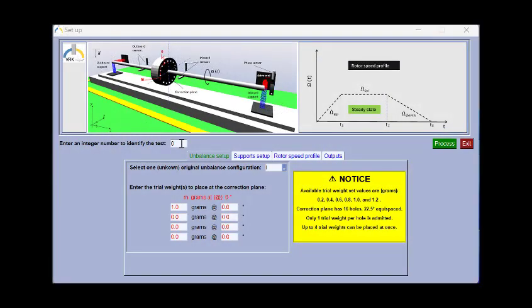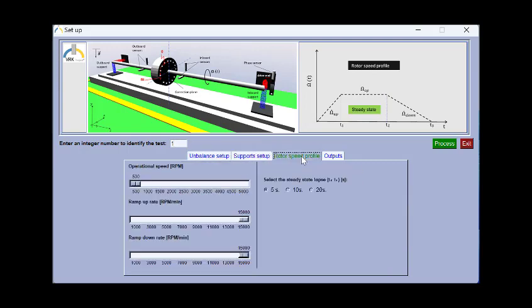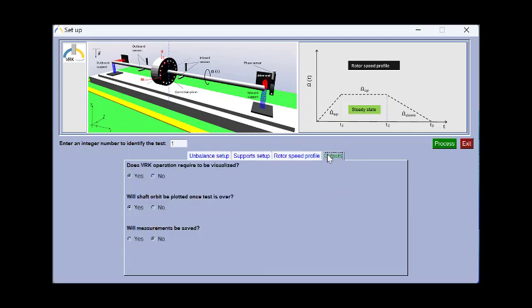So we come back to the setup window. We will set up this run as one. We leave the original unbalanced configuration as is, and we place our trail weight in one gram at zero degrees. We leave the supports set up as is. The rotor speed, we have to set it as 1000 again. Here 1000 RPM is my operational speed and the output. Here I can say that I don't need to see the visualization or yes, I don't need to see the orbit, but I like to save my answer. When I save my response, this is going to be saved as an ASCII text file. And I click process.